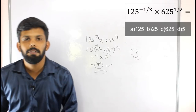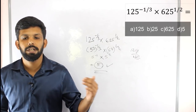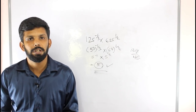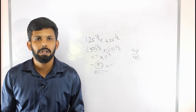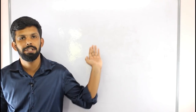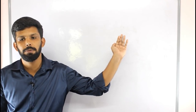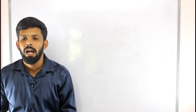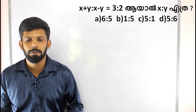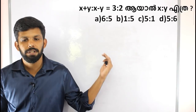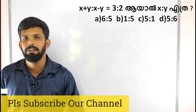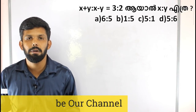The next question is about ratio: x plus y is to x minus y is equal to 3 is to 2. Find x is to y. The options are: 6 is to 5, 1 is to 5, 5 is to 1, 5 is to 6.